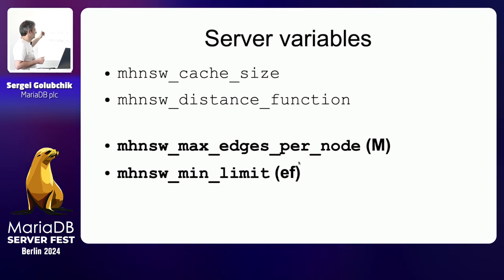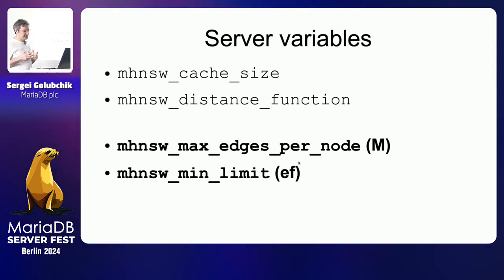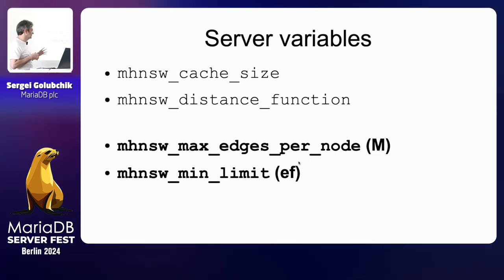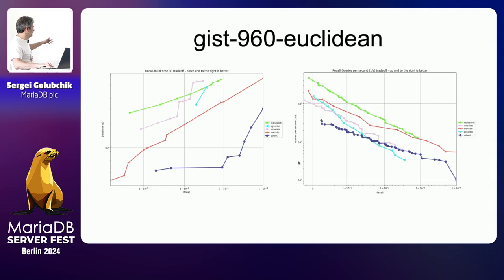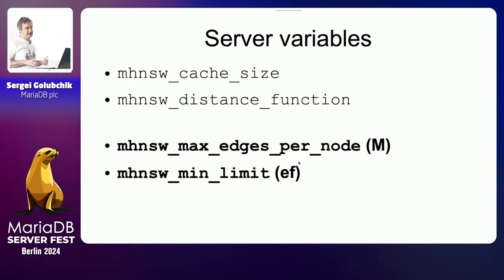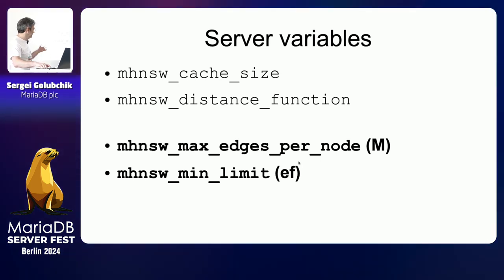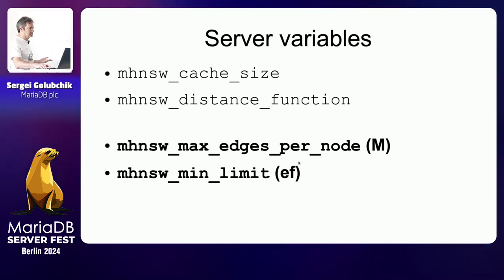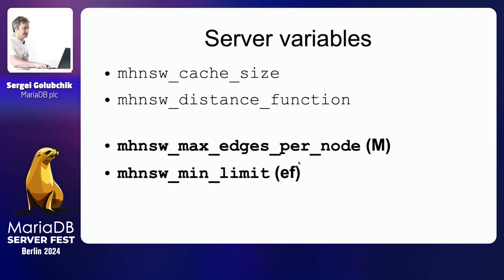By changing both parameters you can have faster inserts and selects with worse recall, or better recall with slower operations. There are two dimensions: faster operations versus better recall, and how to split the time between inserts and selects. There are no other useful tuning parameters — the others are either auto-tuned or I've already found the best values. Users cannot configure those other variables anyway, because to do so you'd need test datasets where you know the exact correct results, which you don't have in real life.